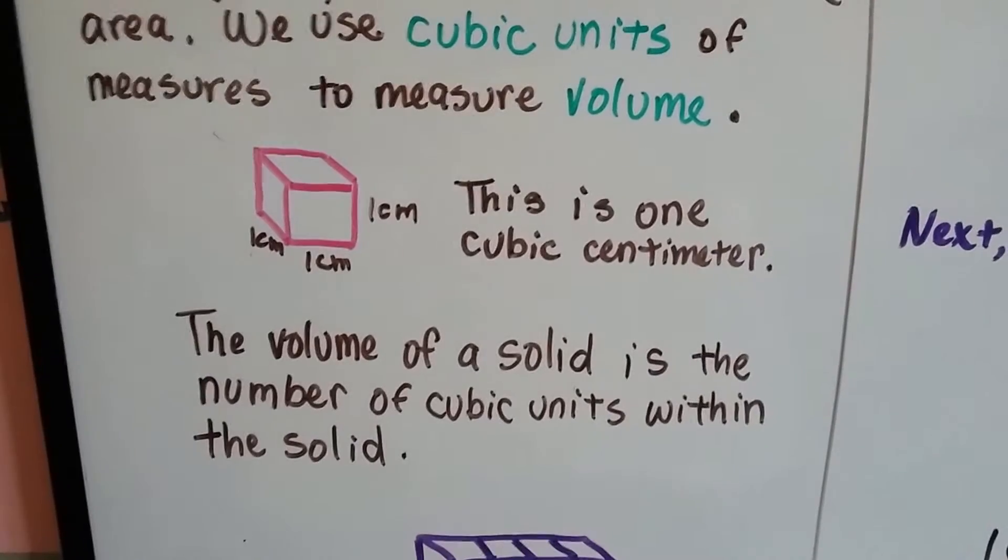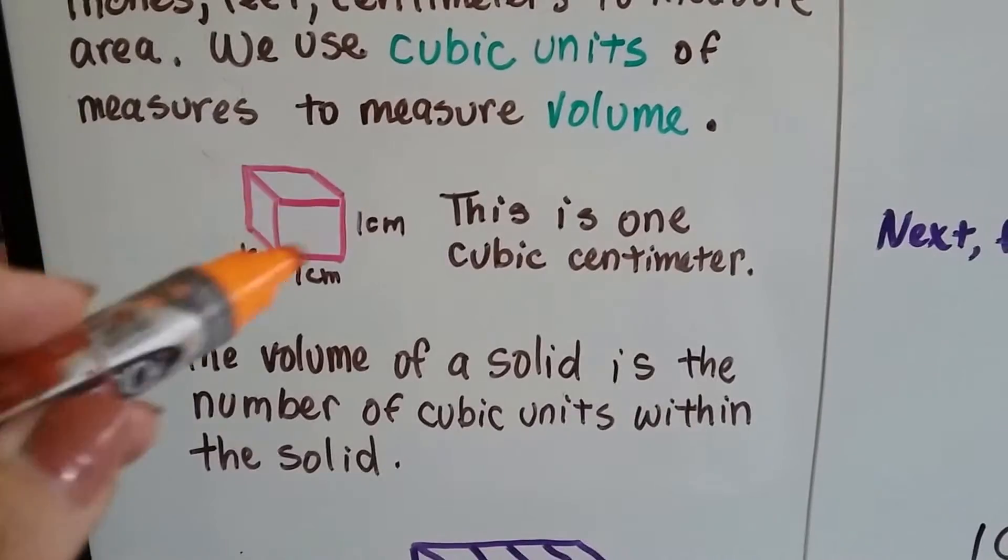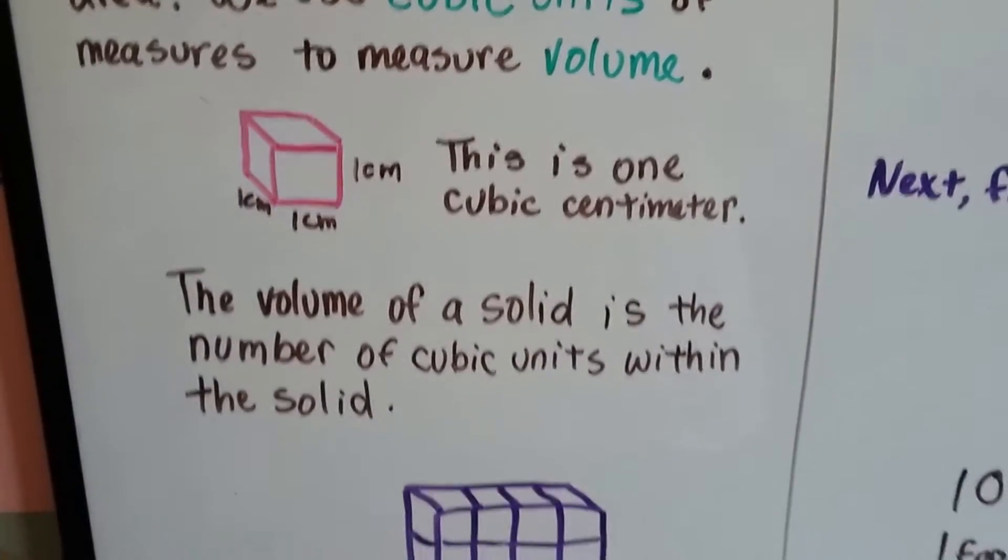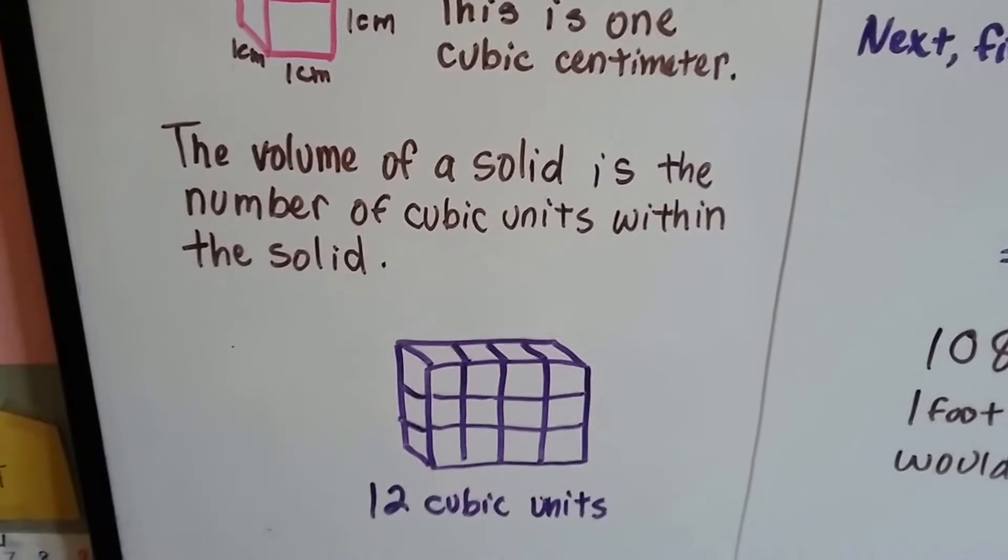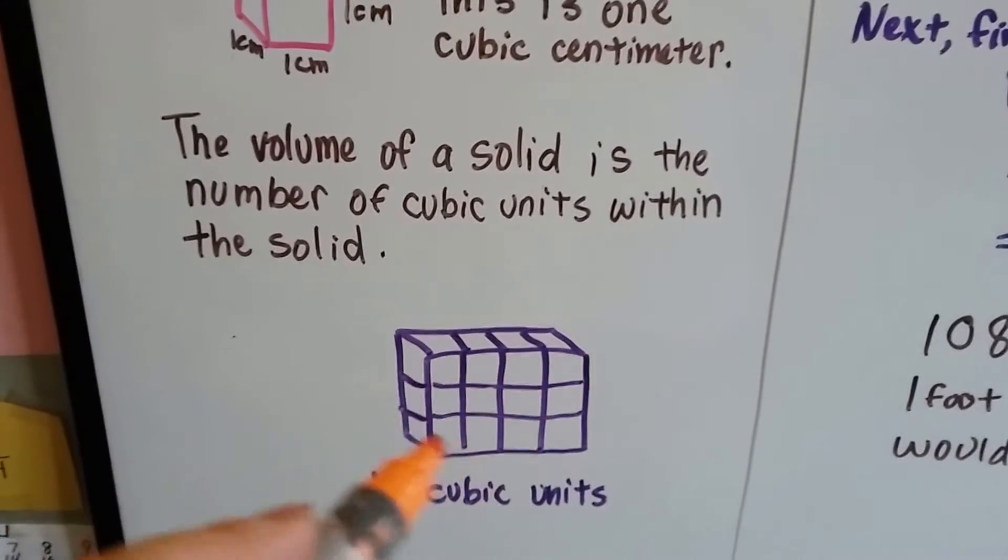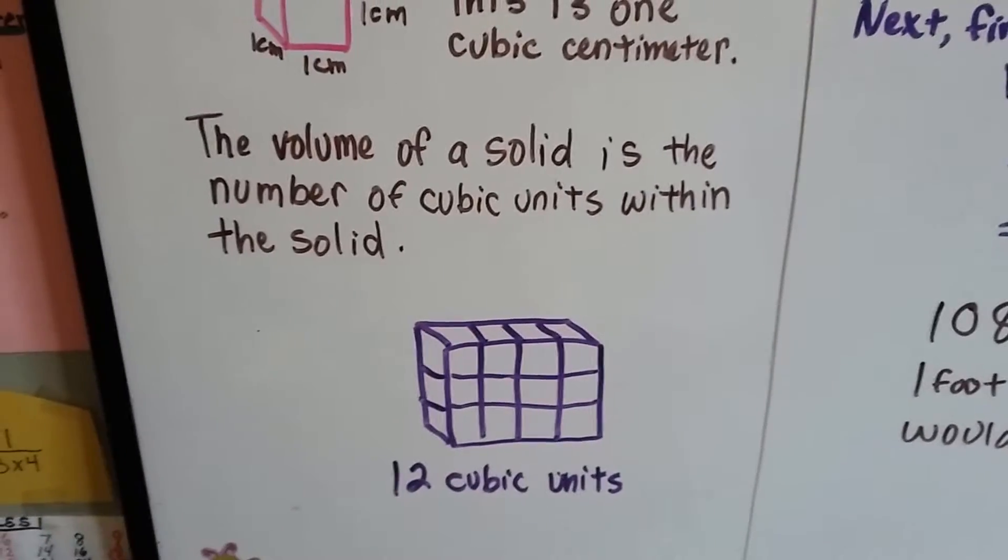This is one cubic centimeter because every side is one centimeter. So it's one centimeter cubed. The volume of a solid is the number of cubic units within the solid. So if we had a box that fit these twelve blocks, it would be a box that's twelve cubic units.